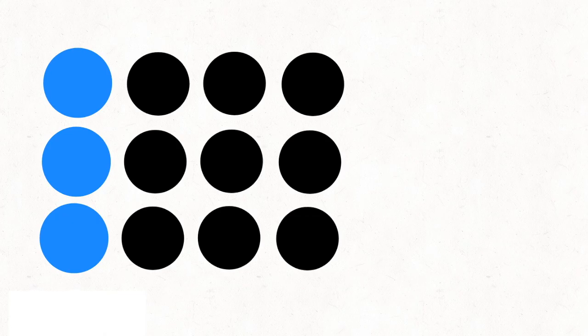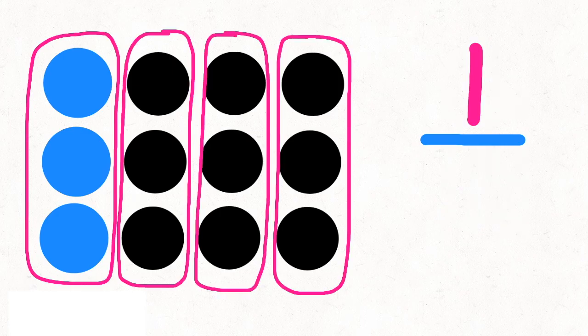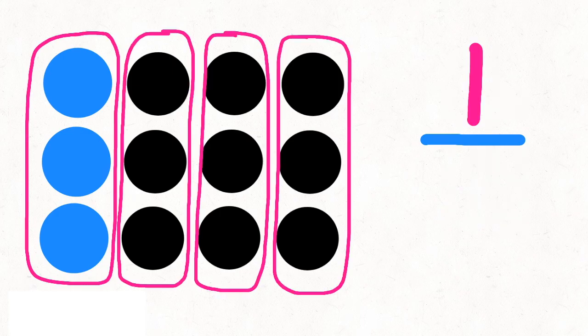Let's say I color 3 out of the 12 dots blue. That means I've colored 3 twelfths of the dots blue. If you look closely, you can see that there are four groups of 3 in 12, and I've colored one of them, so I've colored 1 fourth of the dots. This shows you that 3 twelfths is equivalent to 1 fourth.